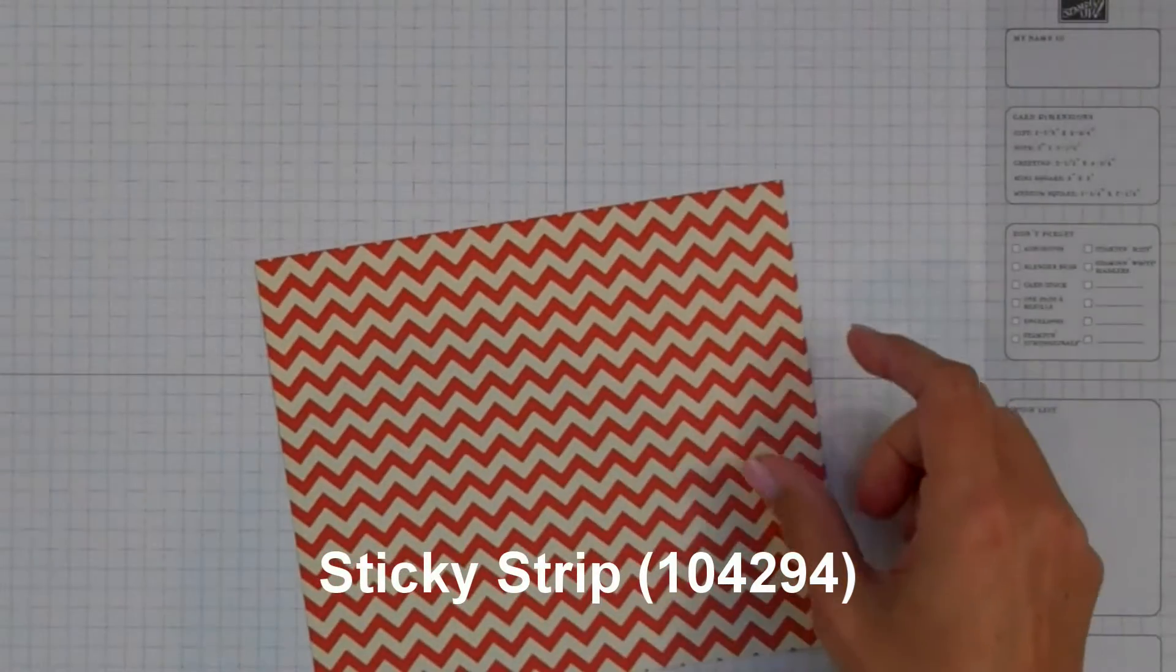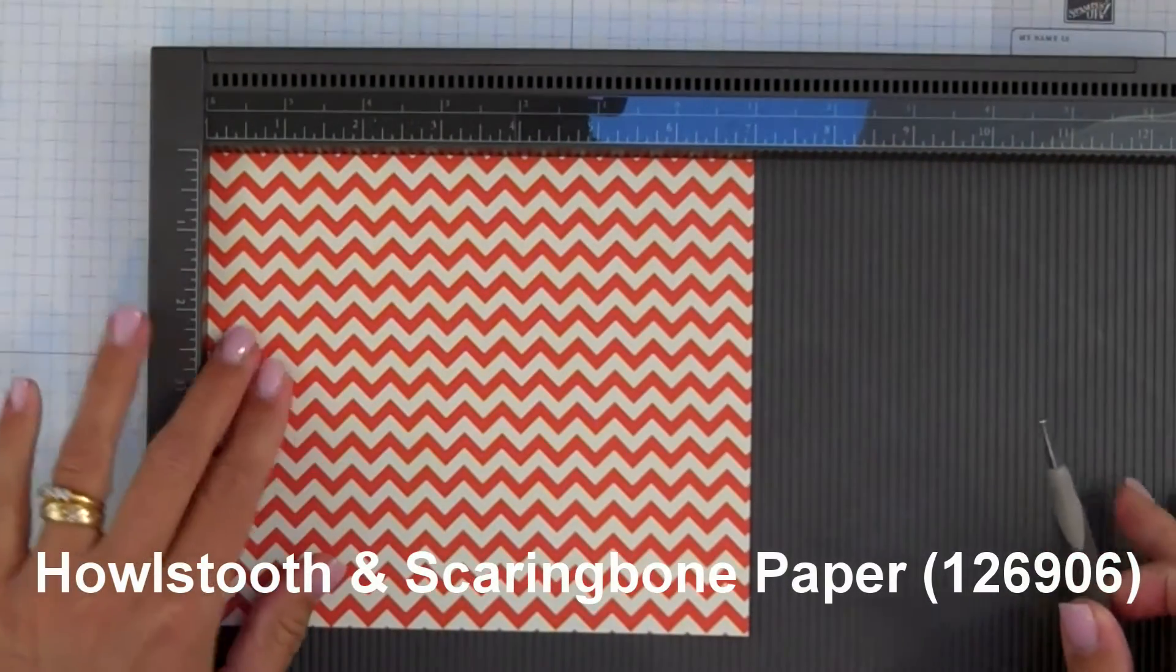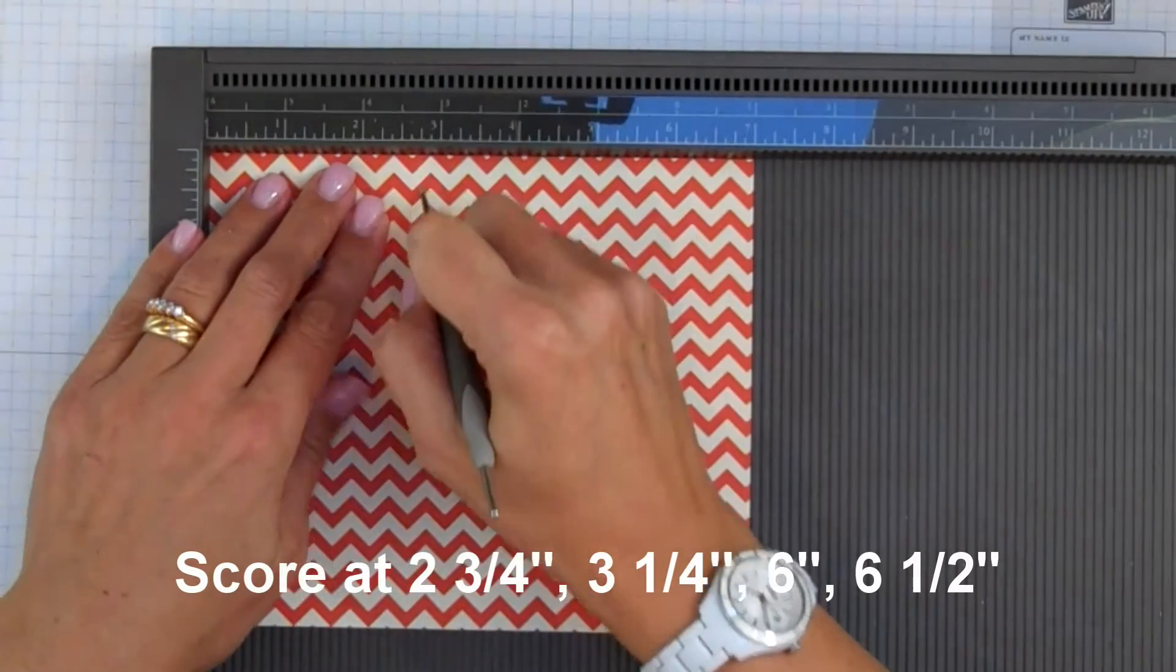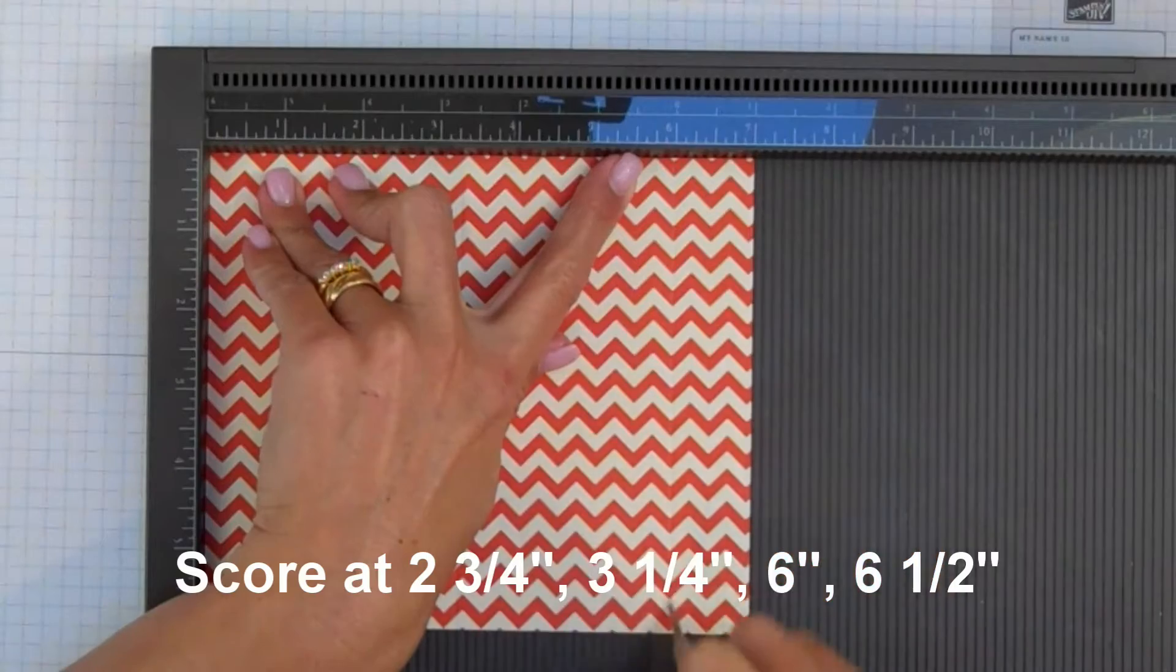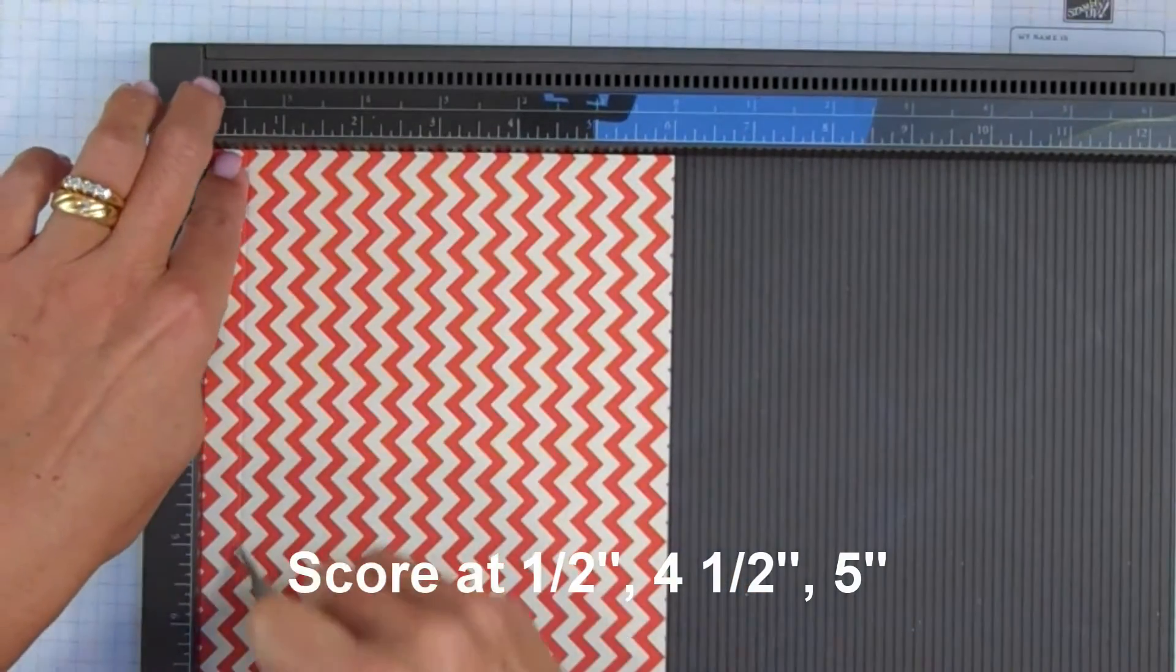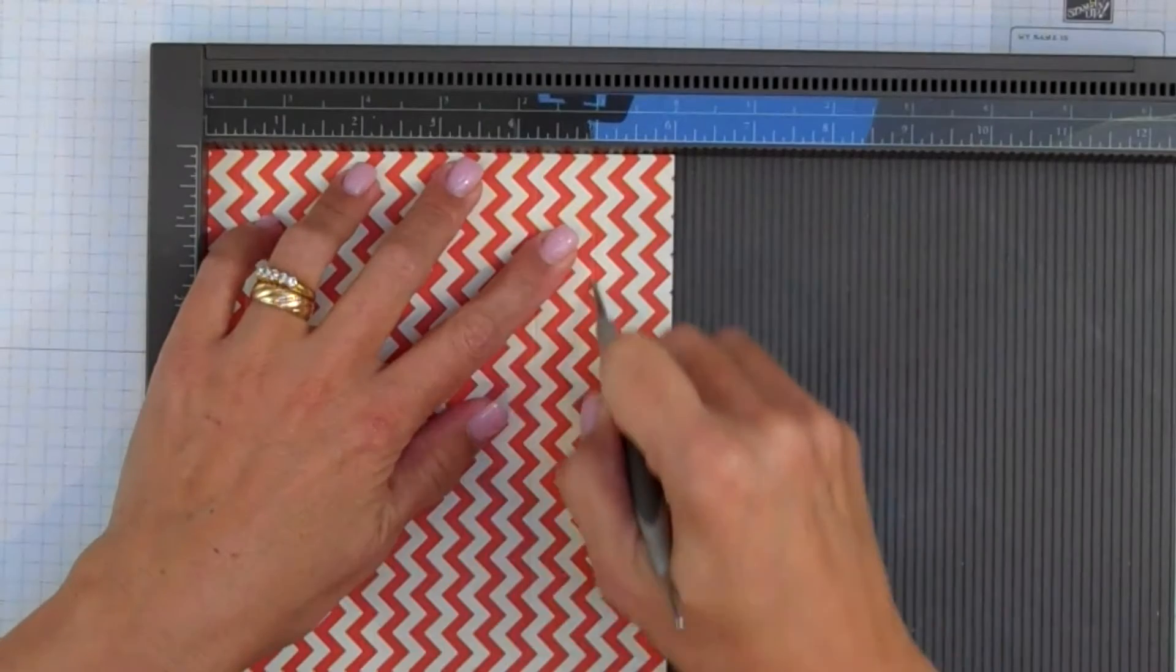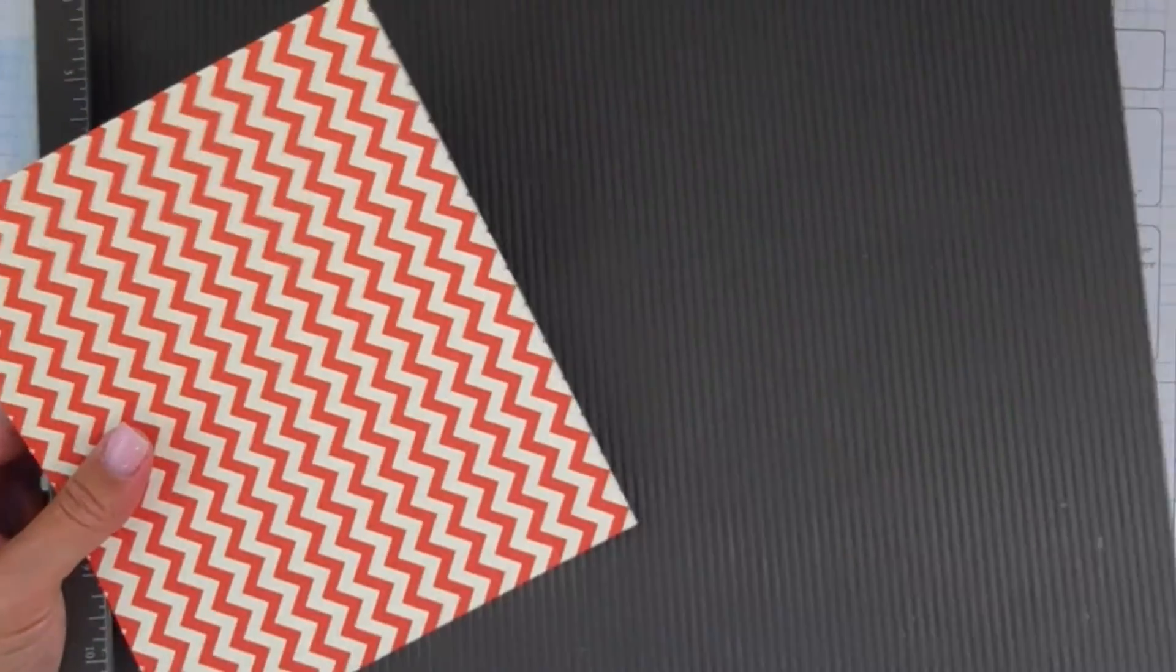So we'll start with our 6x7 piece of designer series paper. This is from the Howl's Tooth and Scaring Bone pattern that is in the Holiday Mini and I'm just going to score it just like I laid out on the template. So I'm going to score it at 2 and 3 quarters using our Simply Score tool and 3 and a quarter. Then I'm going to score it at 6 and at 6 and a half. I'm going to turn it on its side and I'm going to score it at half, 4 and a half and 5. Alright, so now what I'm going to do is just fold those scores nice and tight.